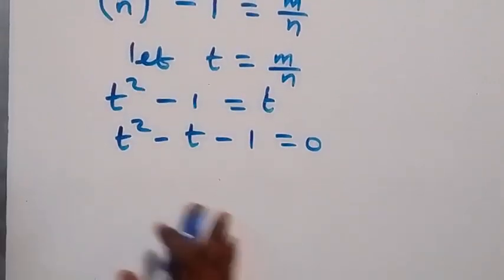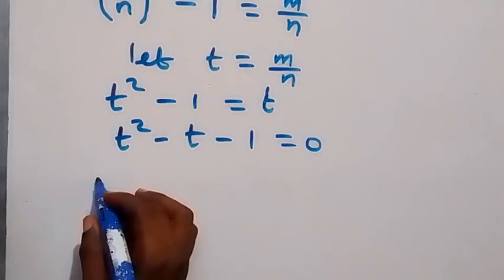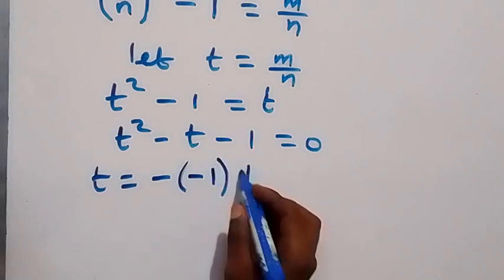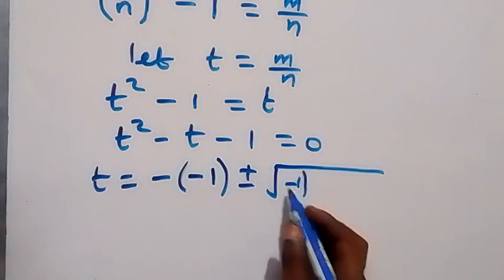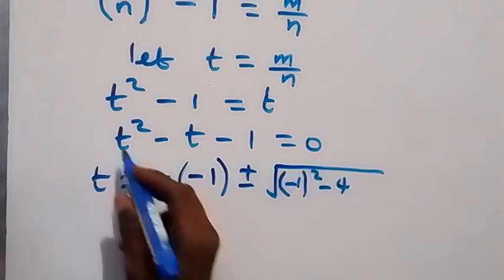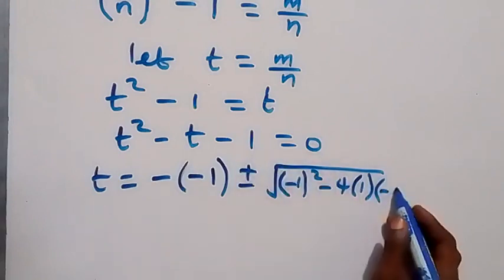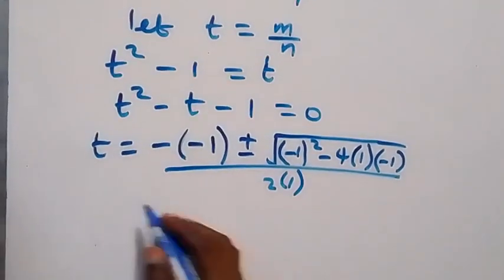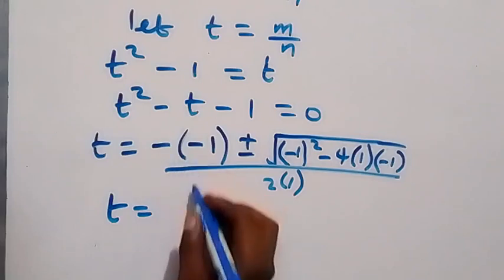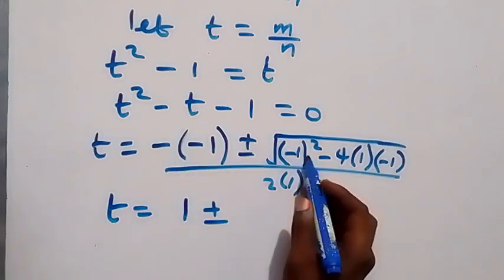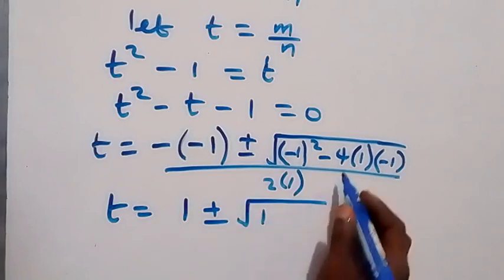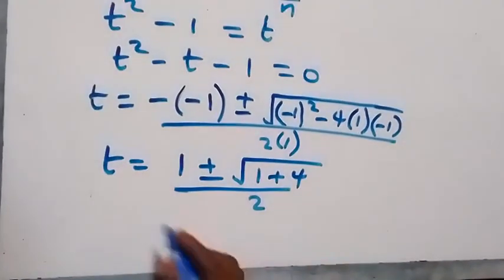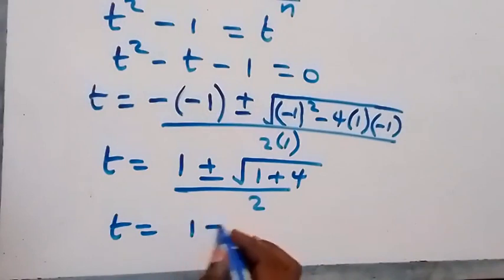We solve this using the quadratic formula: t equals negative b plus or minus square root of b squared minus 4ac, all over 2a. With a = 1, b = −1, c = −1, this gives t equals 1 plus or minus square root of 1 plus 4, over 2, which is t equals 1 plus or minus root 5, over 2.